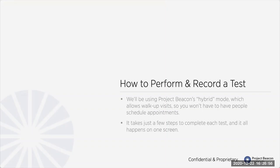A really good question from the chat: for international students, what contact information should we use? It should be the information that they can be contacted with. I think the school's address and phone number is pretty appropriate in those cases. If they're minors, the exact custodial arrangements may affect the parental consent situation — I'm probably not the best person to advise on that specific case.